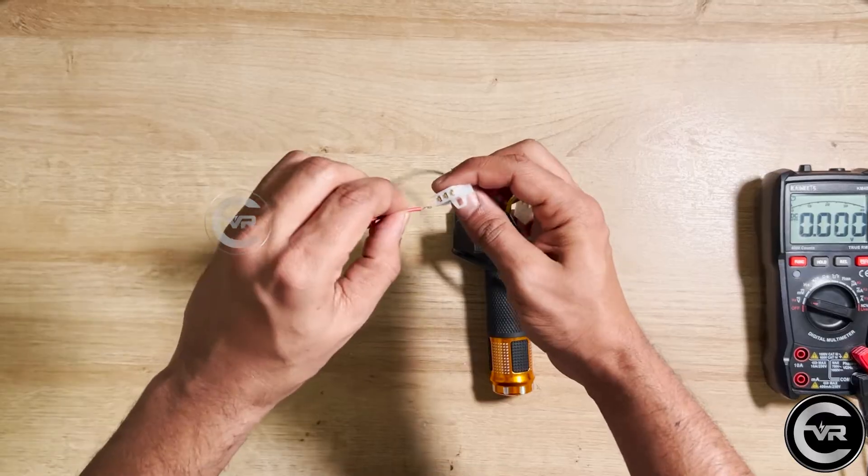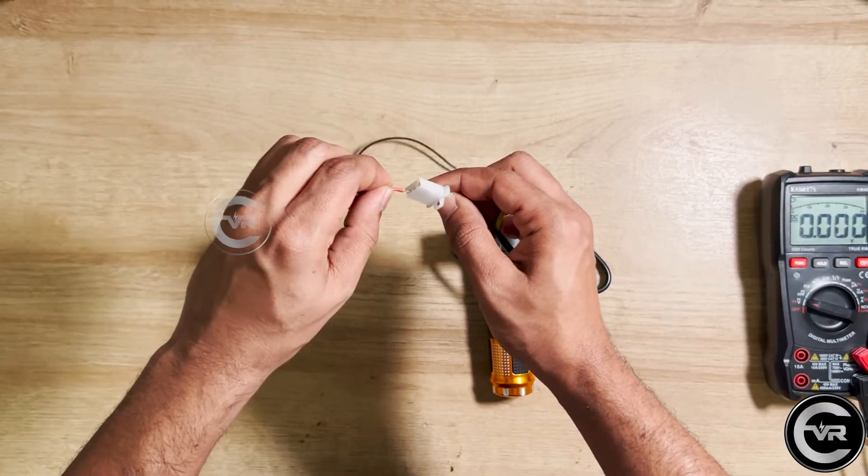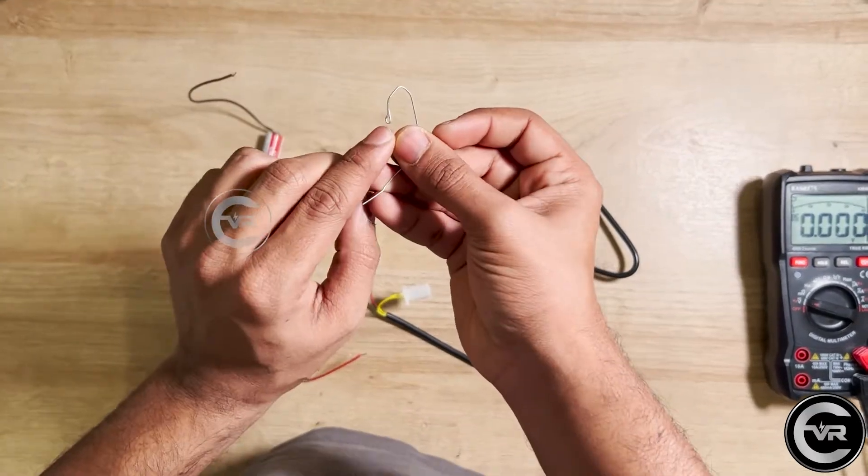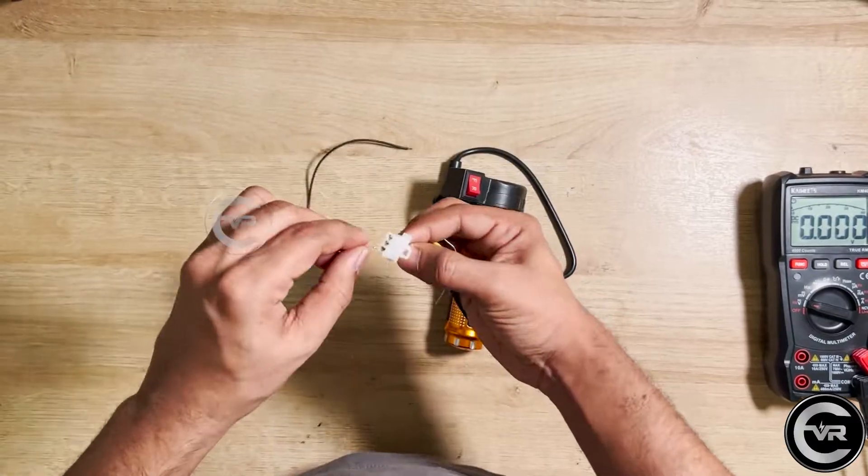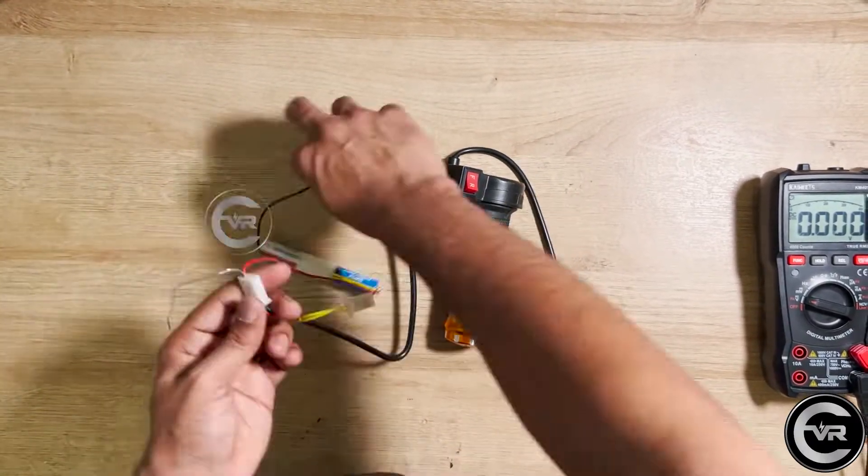Now let's do the connection. Connect the positive of the battery to the red wire, the positive of the throttle. If the wire can't go in, you can use a paper clip—flatten it out and push it into the three-pin connector. Now connect the positive to the red wire of the throttle.